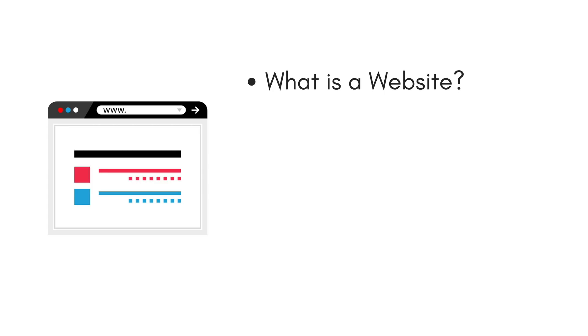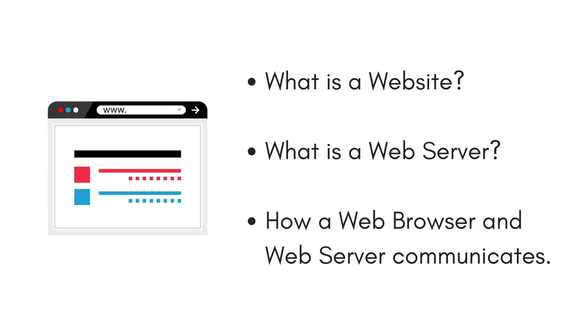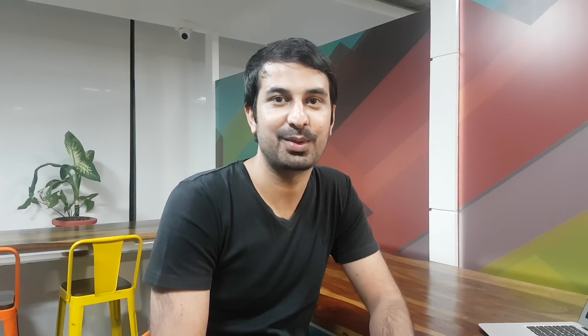To understand how a website works, we need to understand three things. First, what is a website? Second, what is a web server? And third, how a web browser communicates with the web server to show you the website. Let's start with the first one.